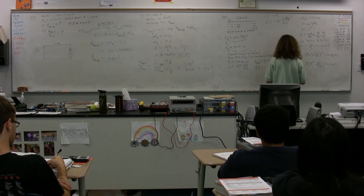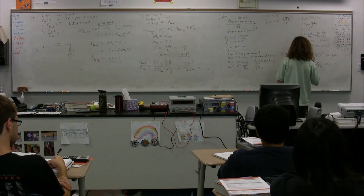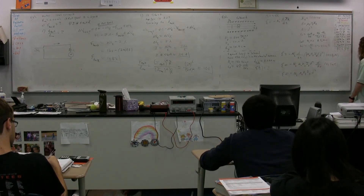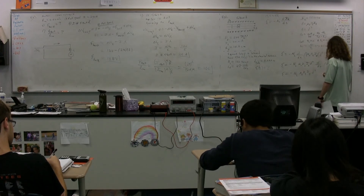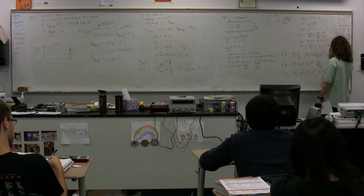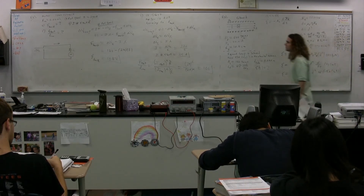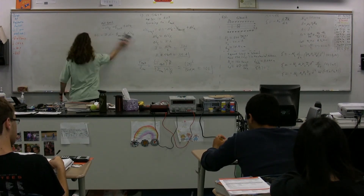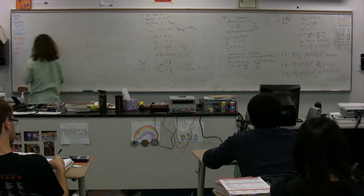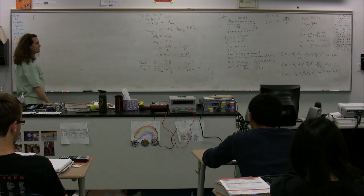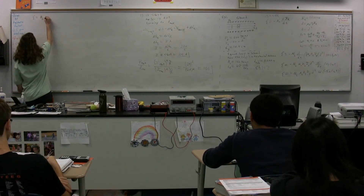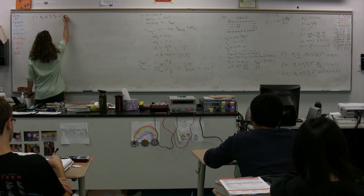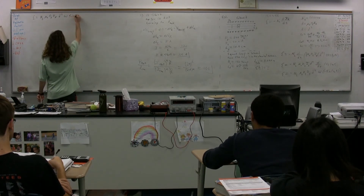The derivative with respect to time of cosine of omega t is negative omega sine of omega t. So now we have a negative times a negative, which cancels. The EMF equals N times μ₀ times the turn density of the solenoid times the current in the solenoid times d squared times the angular frequency times the sine of omega t.